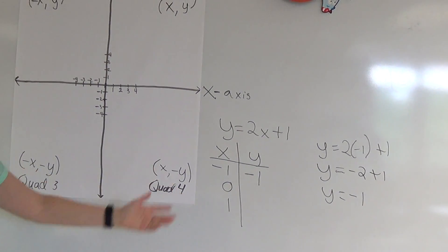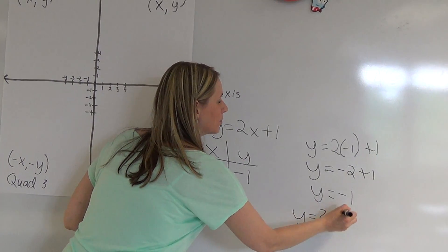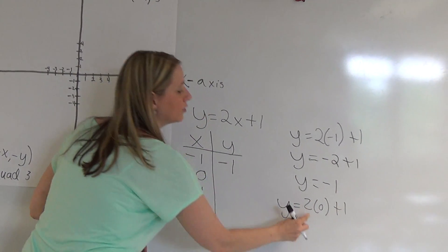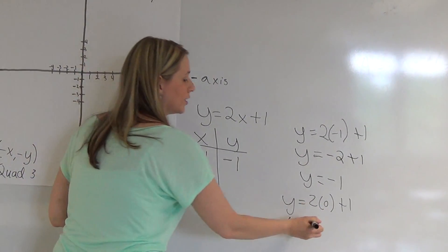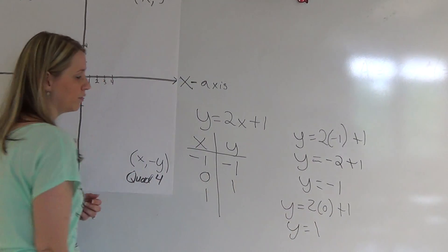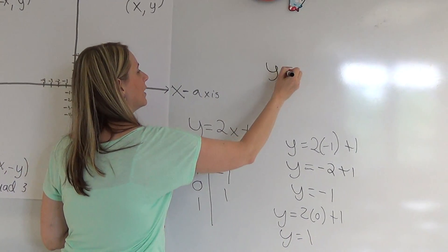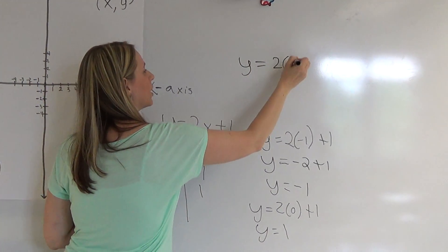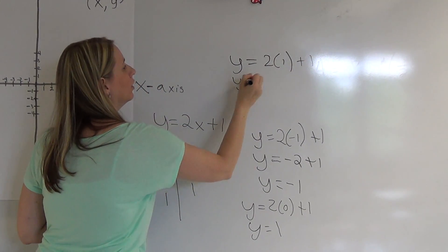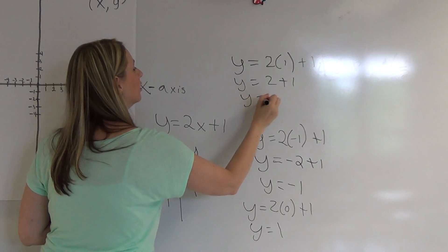Do it again for 0. So you get y is equal to 2 times 0 plus 1. And of course 2 times 0 is just 0, so plus 1 would be 1. So we get a 1 for that one. And do it again for 1. You get y is equal to 2 times 1 plus 1, and 2 plus 1 is 3.